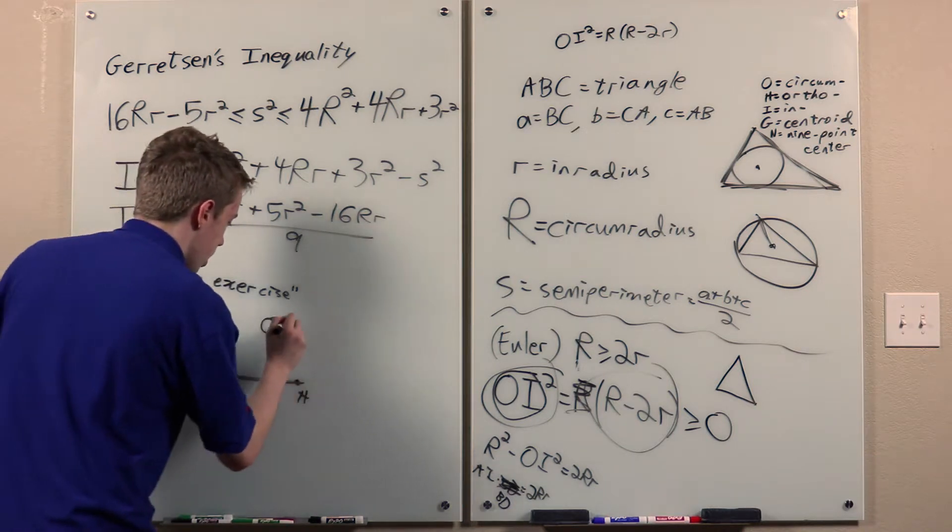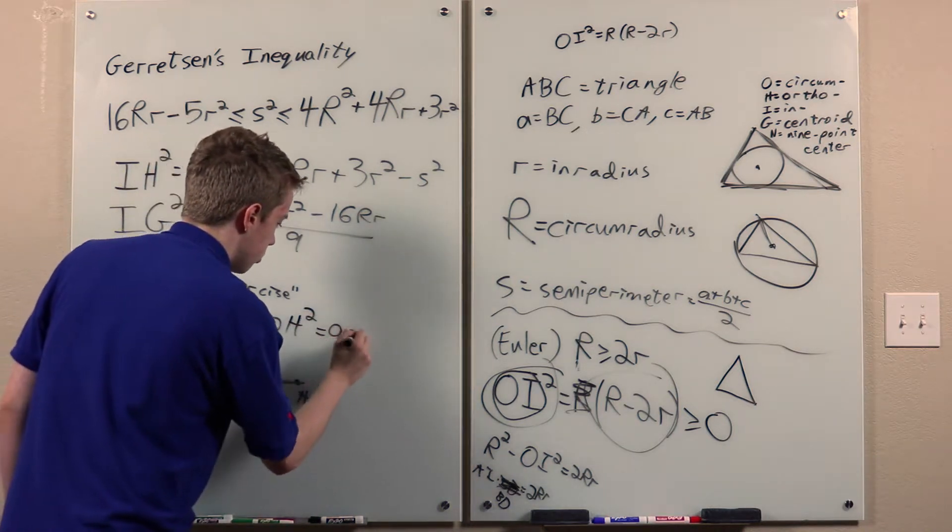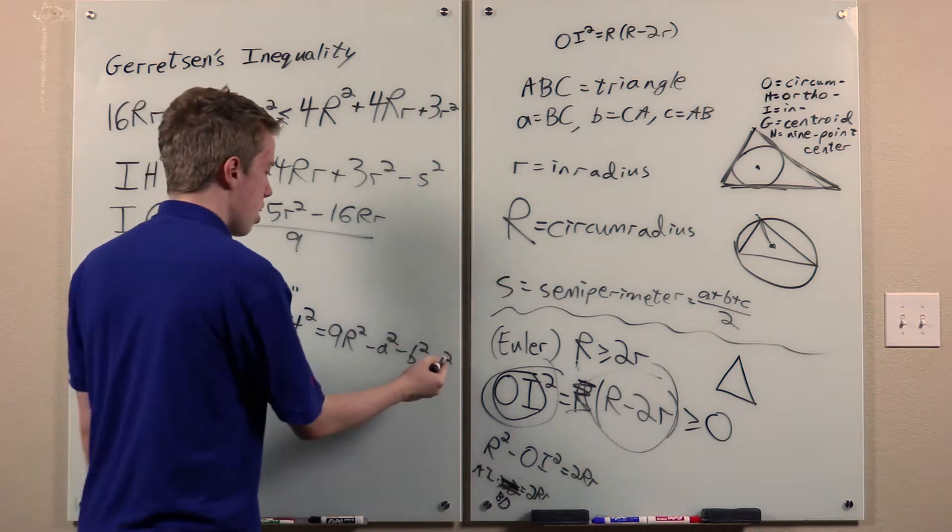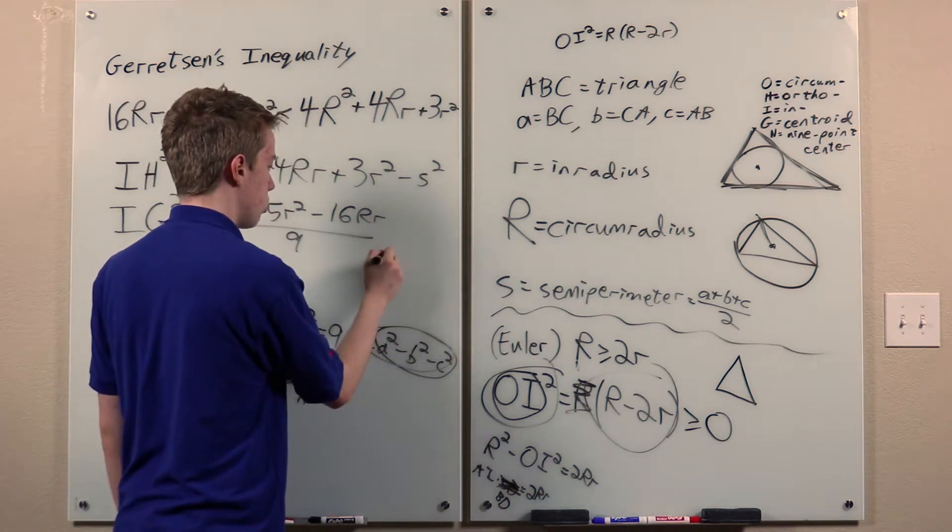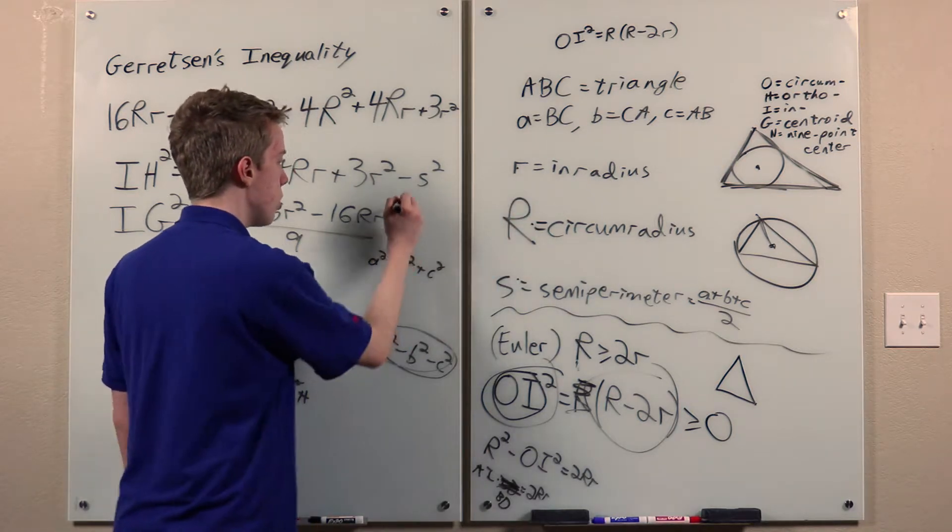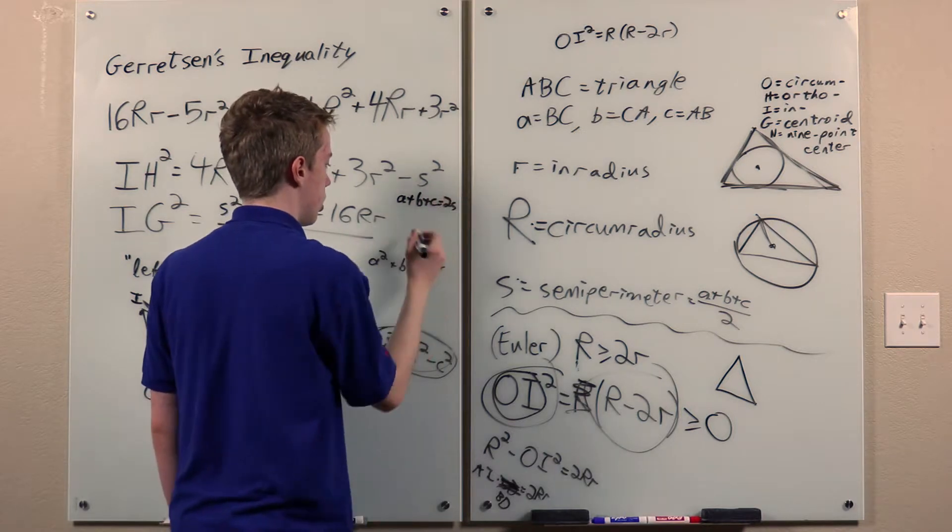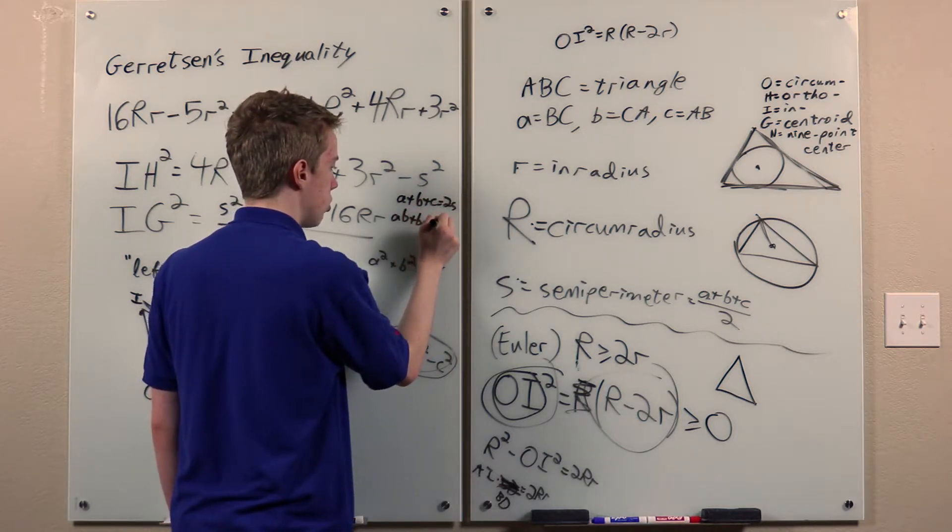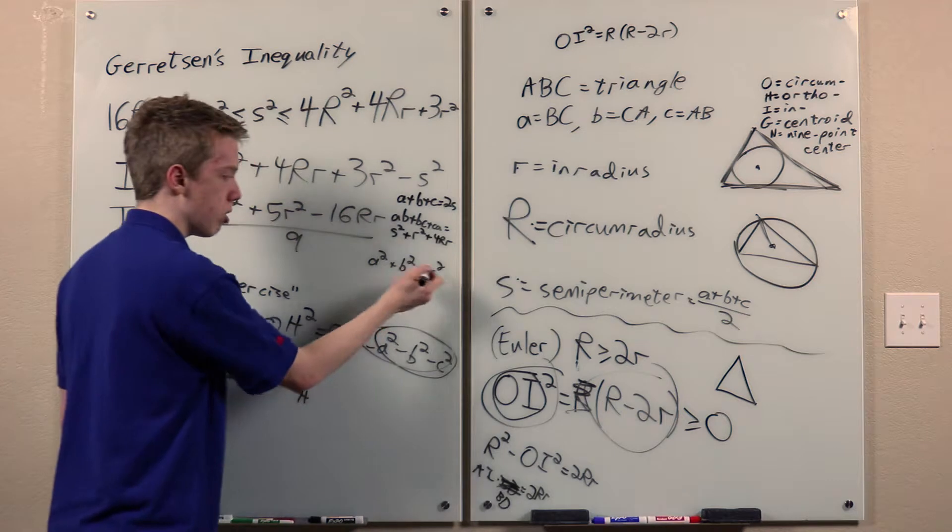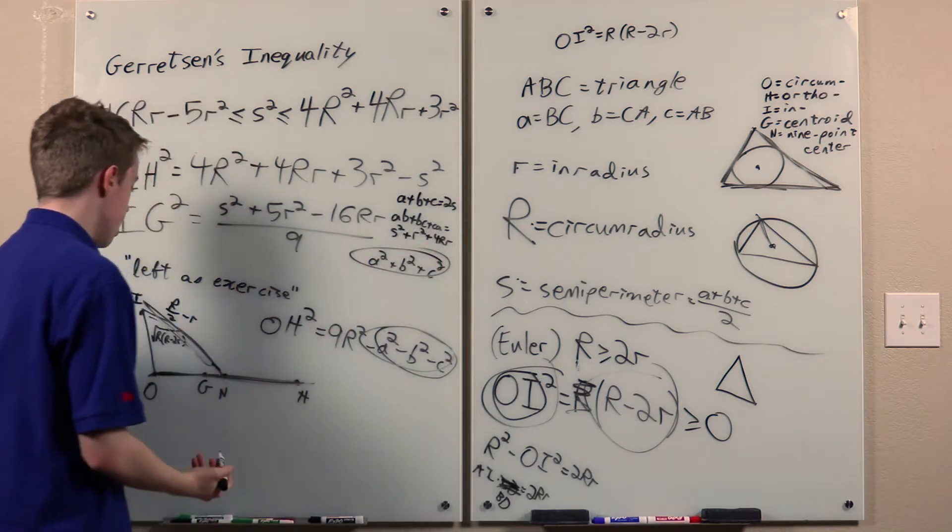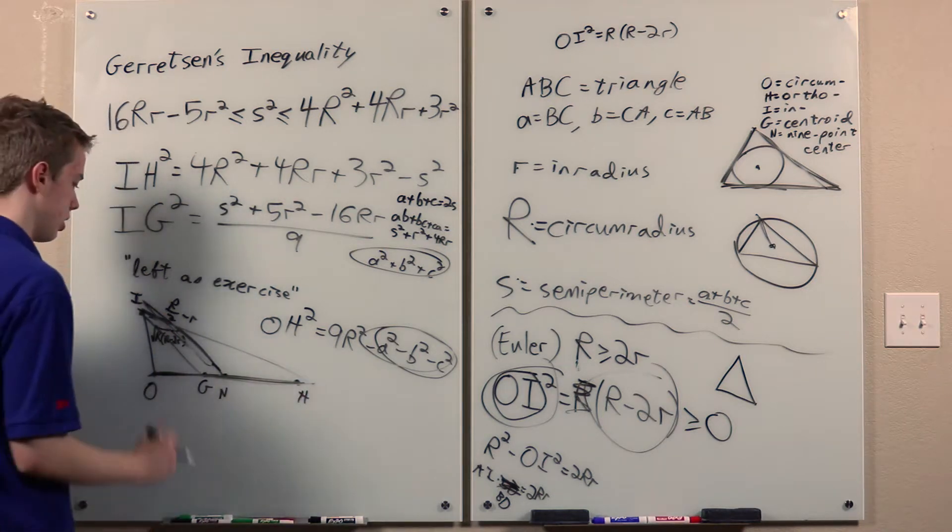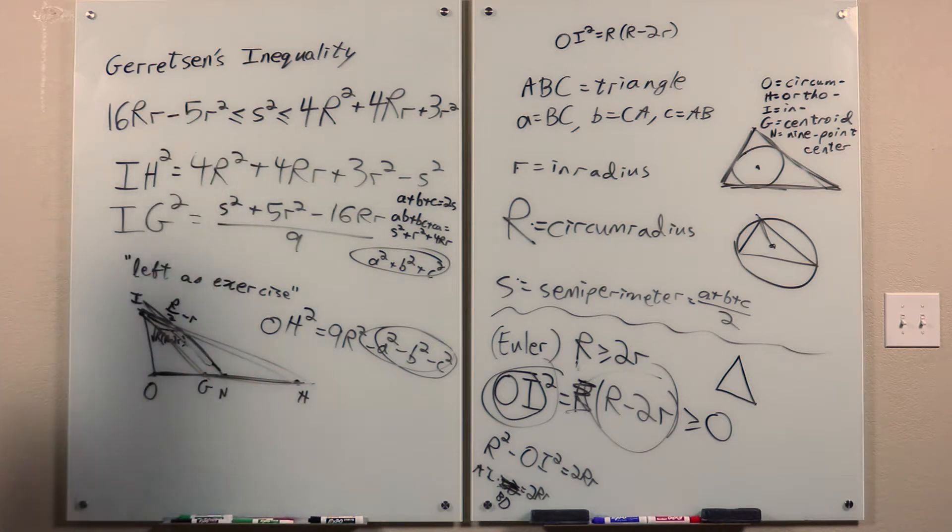Anyway, and then we have OH squared. We can prove this by complex numbers also, or perhaps by other methods. And then we get some... And now we can write... So we want to write this in terms of these three things. And this can also be proven. So we get some expression for this, and that gives us this. And then we just use Stewart's theorem to compute this length and this length, and that proves Gerretson's inequality.